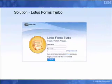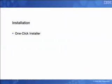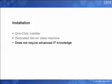After much market research, the management team chose Lotus Forms Turbo as their preferred electronic form solution to replace their traditional and inefficient paper-based process. To start the project, Vanessa, office manager at the hotel, uses the Lotus Forms Turbo one-click installer to install the software on a dedicated server class machine. In order to get up and running with the system, Vanessa does not require any advanced IT knowledge.